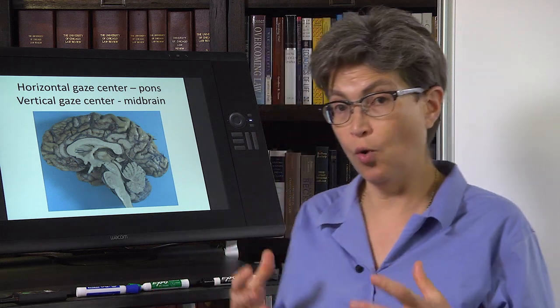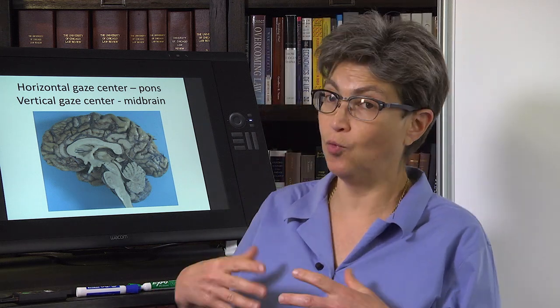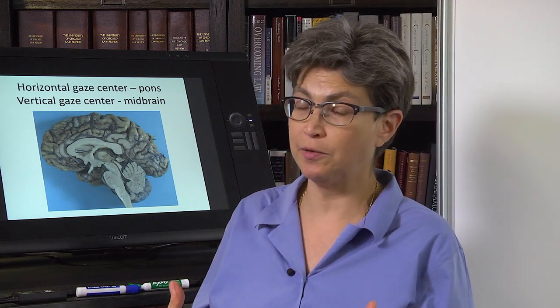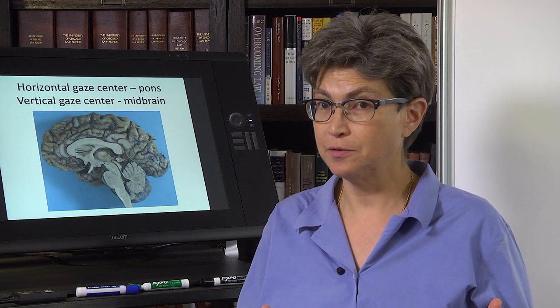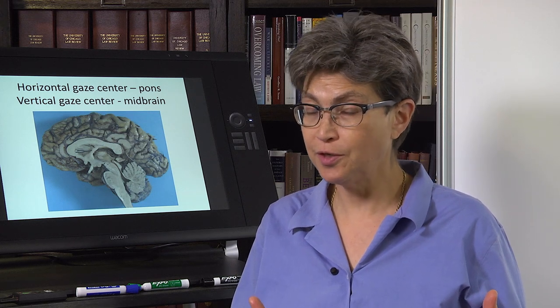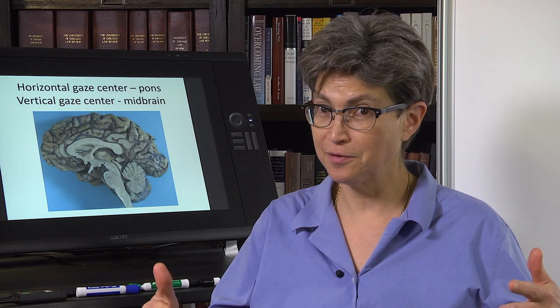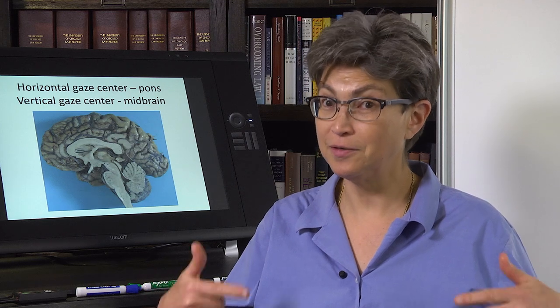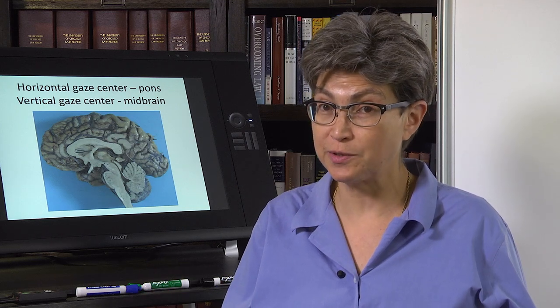There are two gaze control centers. One is in the pons and one is in the midbrain. The pons — do you think it controls horizontal or vertical eye movements? It controls horizontal eye movements.